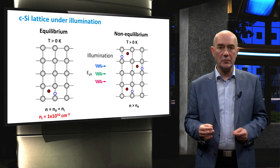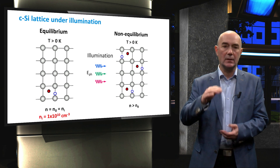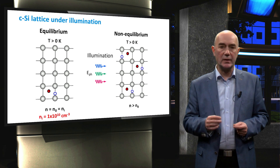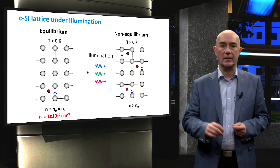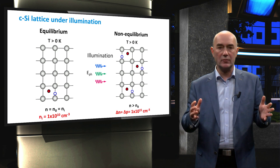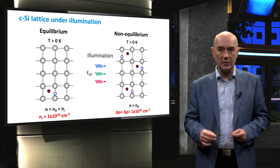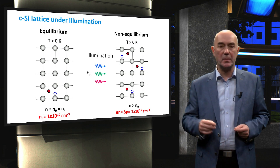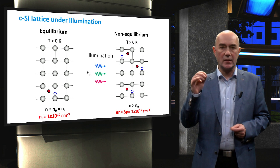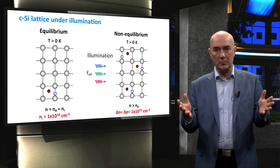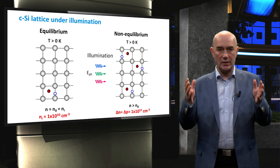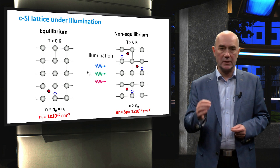The absorption of photons with energy higher than the band gap leads to the generation of extra electron-hole pairs. This brings the system into a non-equilibrium state. We assume that the illumination will increase the concentration of electrons and holes by 1×10¹⁵ pairs per cubic centimeter. We call this increase the excess carrier concentration. In case of illumination, the concentration of excess electrons, delta N, is equal to the concentration of excess holes, delta P.